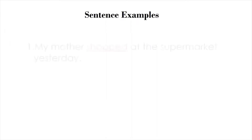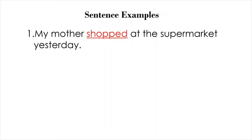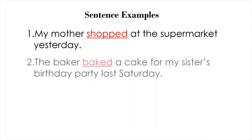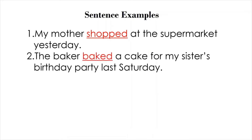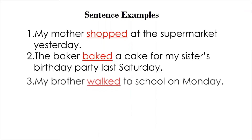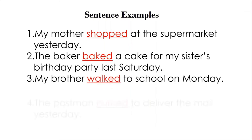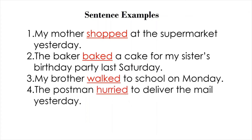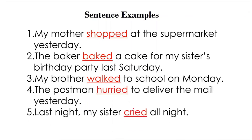Now let's see how we use past tense verbs in sentences. My mother shopped at the supermarket yesterday. The baker baked a cake for my sister's birthday party last Saturday. My brother walked to school on Monday. The postman hurried to deliver the mail yesterday. And last night, my sister cried all night. Notice the use of yesterday, last night, and so on — they show that the actions took place in the past. Hope you enjoyed this lesson on past tense verbs. In the next video, we will look at irregular verbs. Thanks for watching.